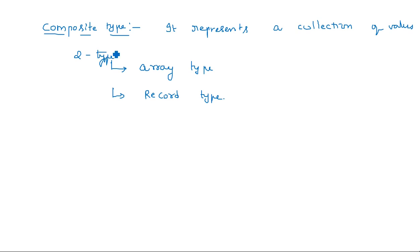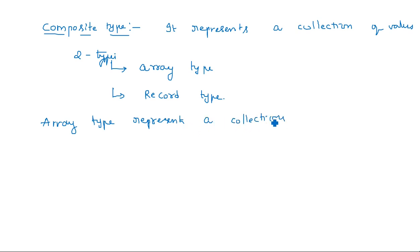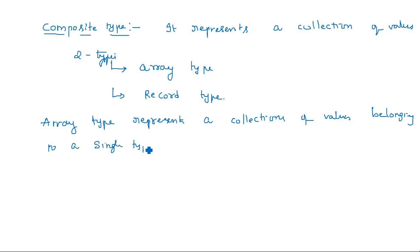Array type represents a collection of values all belonging to a single type - we know in C language arrays have the same meaning. So array type represents a collection of values belonging to a single type. Suppose I am grouping all integers together, then it is a valid array collection. If we are having a group of different items, then it is not an array.